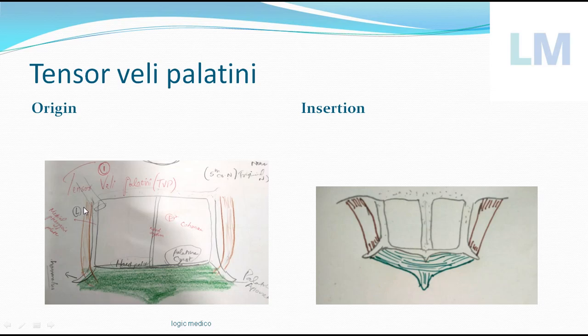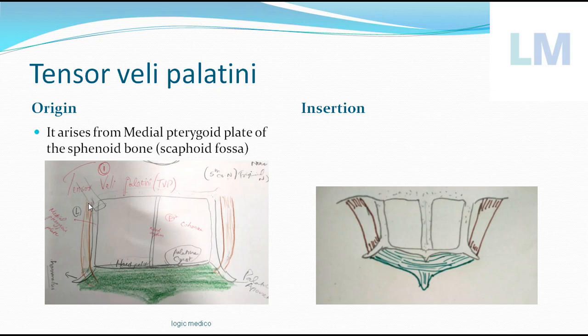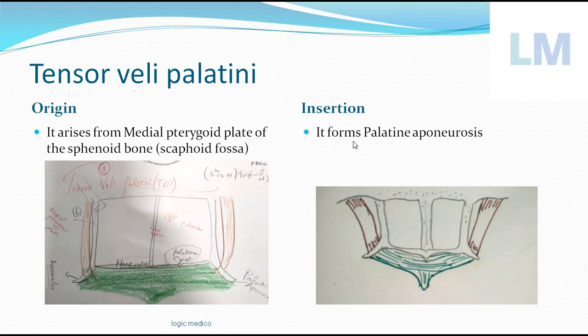The origin of tensor veli palatini is from the lateral surface of the Eustachian tube (auditory tube) and from the lower surface of the greater wing of the sphenoid bone. That part of the sphenoid bone has a boat-shaped depression called the scaphoid fossa. The muscle runs vertically downwards, parallel to the medial pterygoid plate, hooks across the pterygoid hamulus, and its tendon forms a flattened structure called the palatine aponeurosis, which is anchored to the posterior border of the hard palate and to an elevation just below it called the palatine crest.